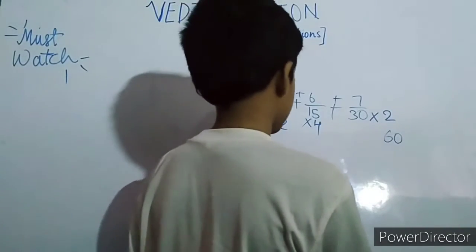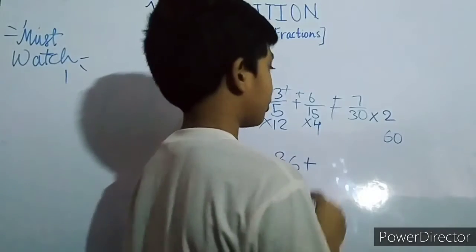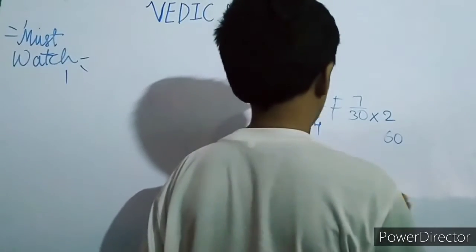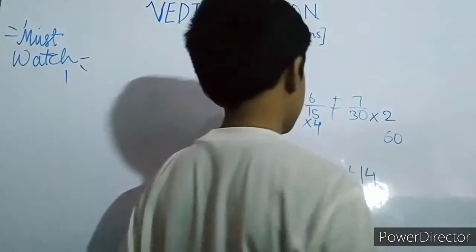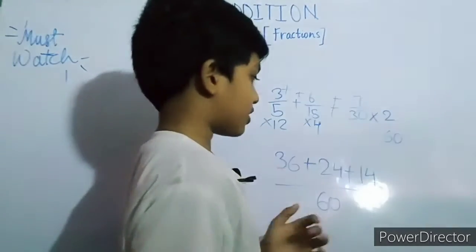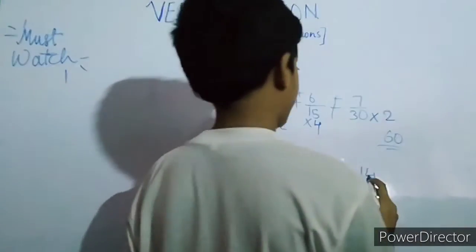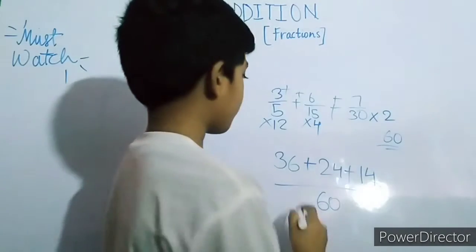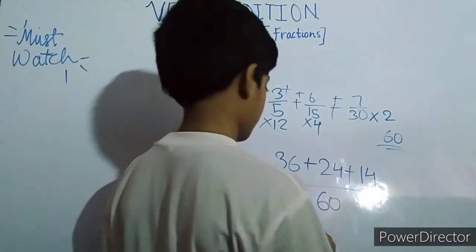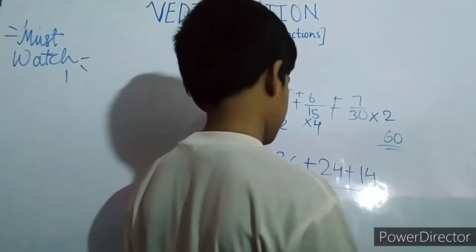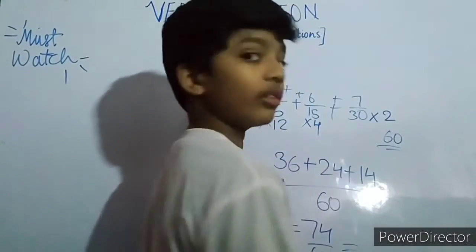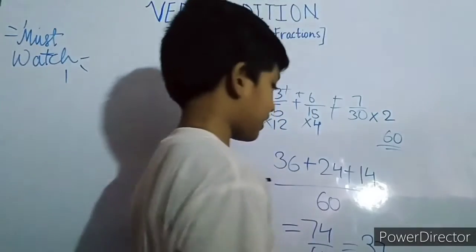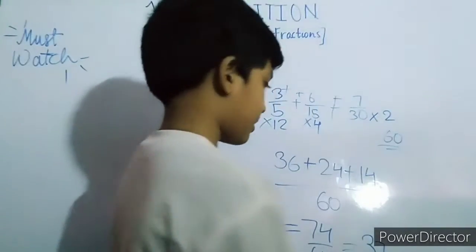Now add the numerators by multiplying: three into twelve which is thirty six, plus six into four which is twenty four, plus seven into two which is fourteen. The denominator is sixty — our common multiple. Fourteen plus twenty four is thirty eight, thirty eight plus thirty six is seventy four. So seventy four by sixty. Our previous answer was thirty seven by thirty.